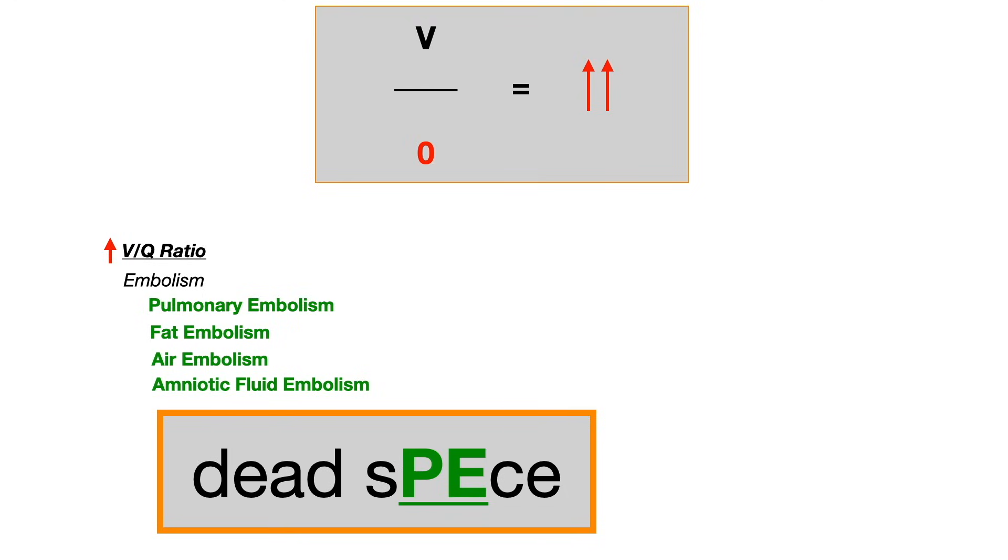V doesn't change, Q goes down because the blood flow, the percusion, that's what's decreasing here. That creates dead space.